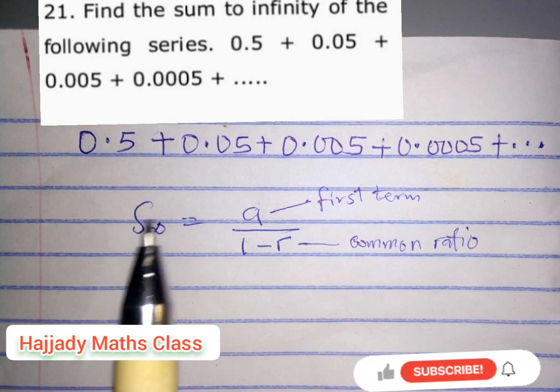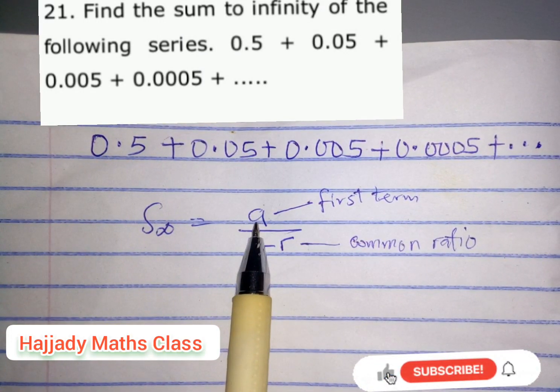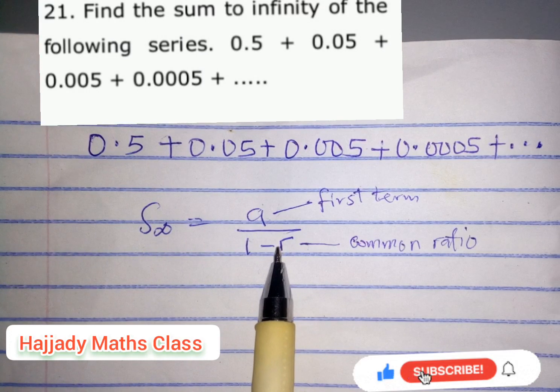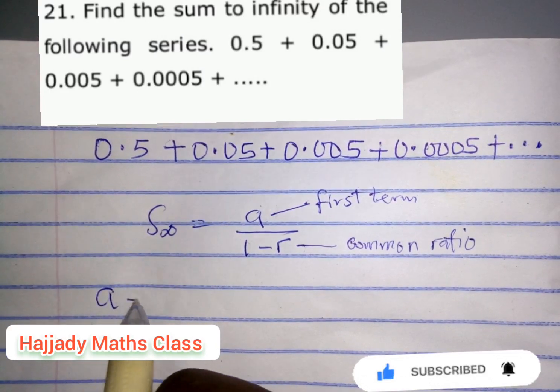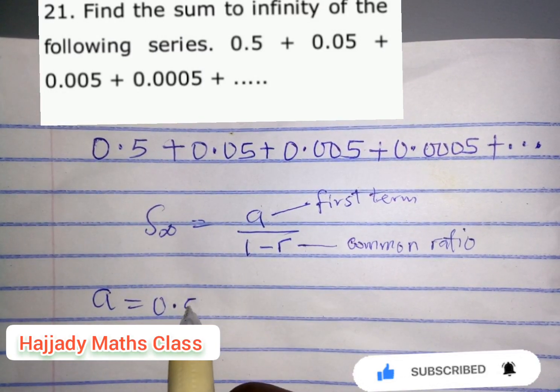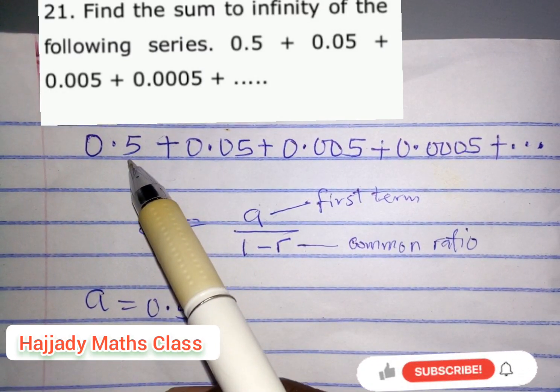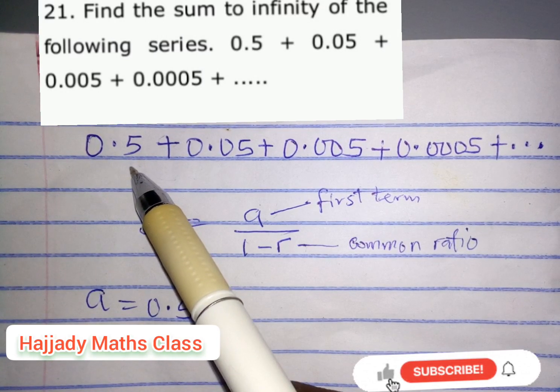is to identify our first term and also our common ratio. So from this question we can see that our first term, which is a, equals 0.5. This is the first term, so this is our a.